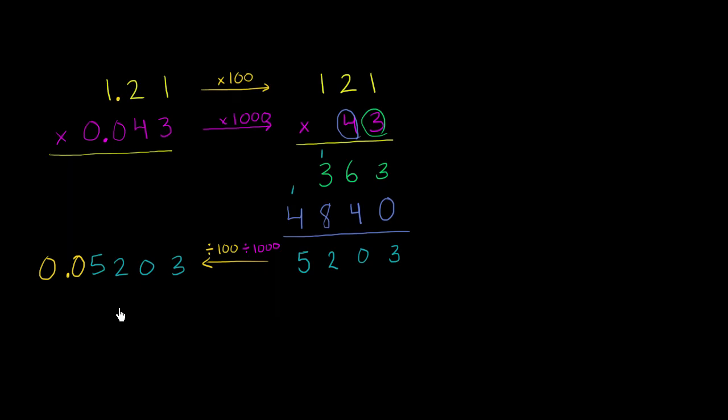So one way you could think about it is just multiply these two numbers as if there were no decimals there. Then you could count how many digits are to the right of the decimal. And you see that there are 1, 2, 3, 4, 5 digits to the right of the decimal. And so in your product you should have 1, 2, 3, 4, 5 digits to the right of the decimal. Why is that the case?